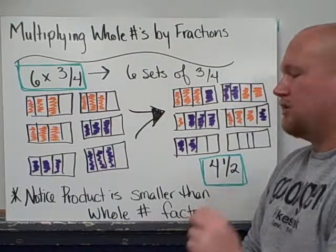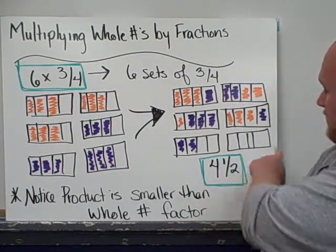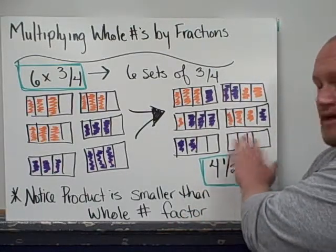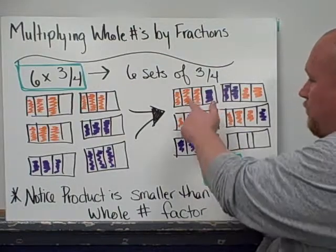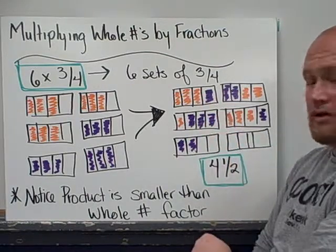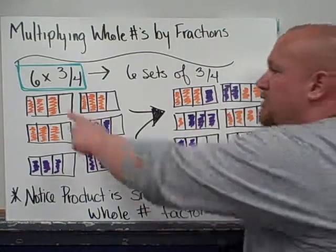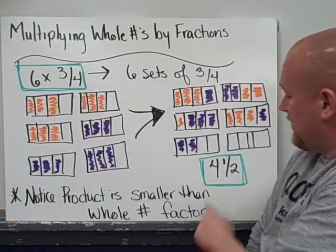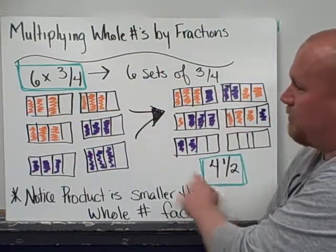So if I actually look at what my number is, there's nothing in this bottom six, so that doesn't even count as a whole number. I have one whole, two whole, three whole, four wholes, and one half. So six times three-fourths ends up being four and a half when I model it.